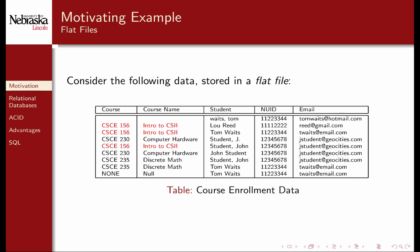Another issue is that there's repeated data. Every record of a student enrolled in a particular course repeats the course name and number. Likewise, every student record repeats the name and the NUID. Such repetition is inefficient and unnecessary, but more importantly, it can lead to data anomalies and inconsistencies, as we previously noted.